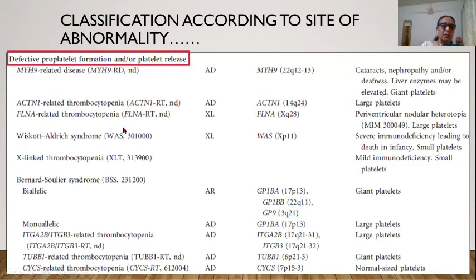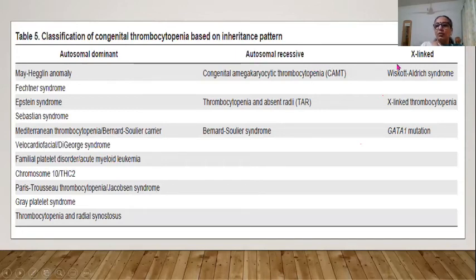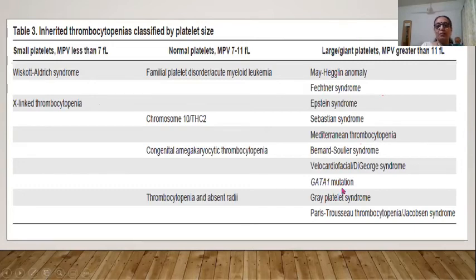Conditions due to defective pro-platelet formation include MYH9-related disease — autosomal dominant, with associated cataracts, auditory problems, and nephropathy — and Wiskott-Aldrich/X-linked thrombocytopenia. Regarding platelet size: only X-linked thrombocytopenia and Wiskott-Aldrich have MPV below 7 (small platelets); giant platelets occur in many other hereditary conditions; normal-sized platelets occur in yet others. This classification chart is important when evaluating such patients.